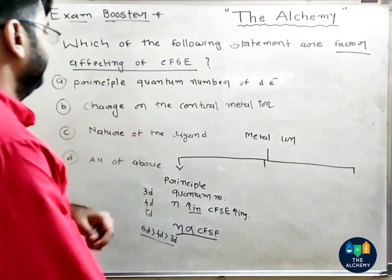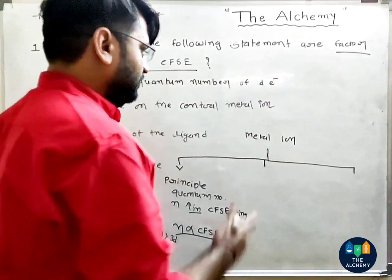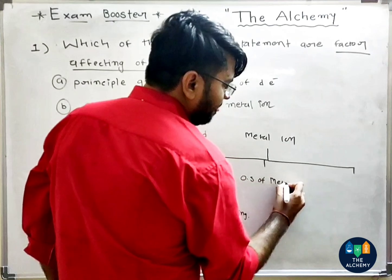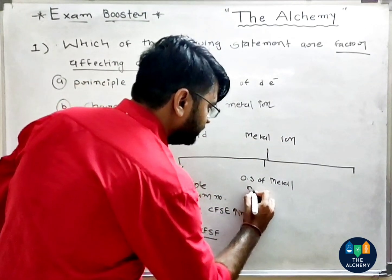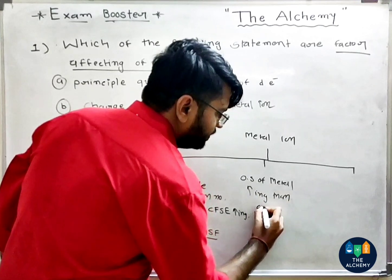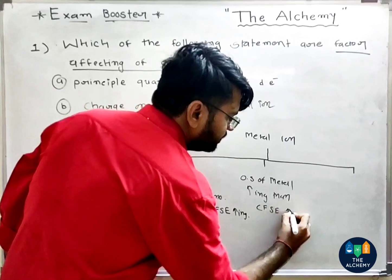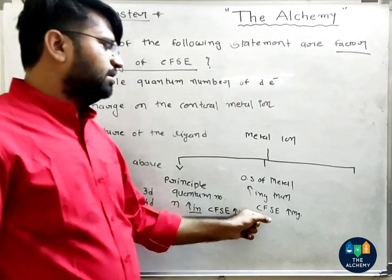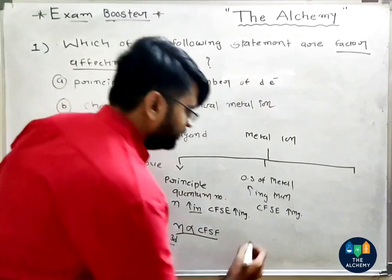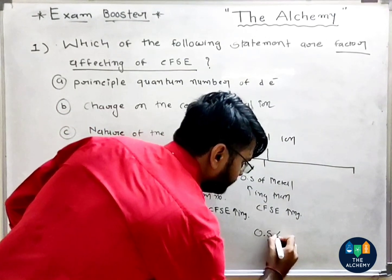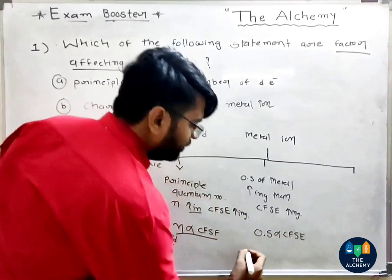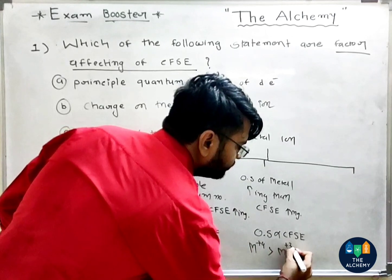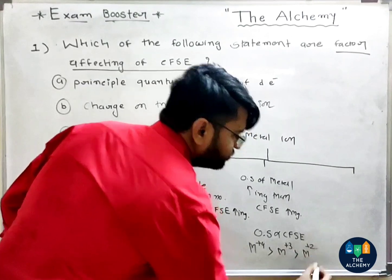The second point is the charge on the central metal ion. As the oxidation state of the metal increases, CFC increases. So oxidation state is proportional to CFC. For example: metal +4 has greater CFC than metal +3, which is greater than metal +2.